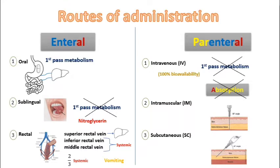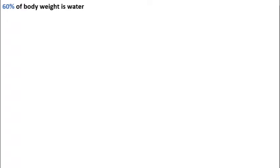Now we will start discussing distribution. How much of our body is fluids? It is 60% of our body weight. So for a 70-kilogram individual, there are 42 liters of water.